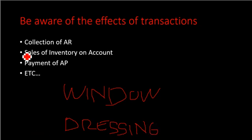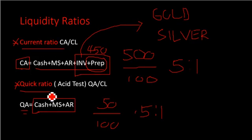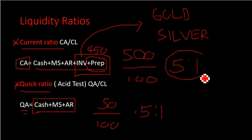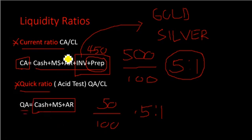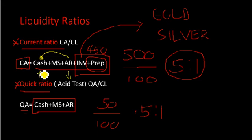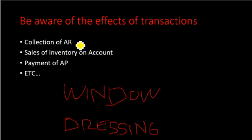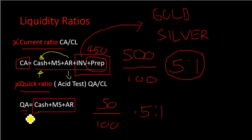Let's talk about the collection of accounts receivable and its effect on the current ratio. When you collect accounts receivable, it is converted into cash — your accounts receivable will be lower, but your cash will increase by the same amount. Therefore, the effect of collecting accounts receivable on your current ratio is zero — no effect. Similarly, in the quick ratio, accounts receivable is converted into cash, so there is also no effect.